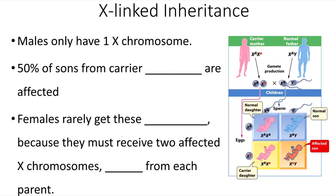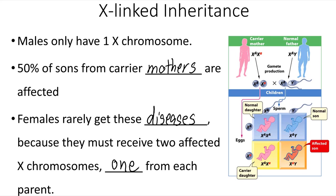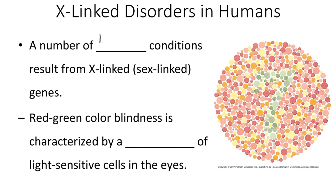Males have only one X chromosome, so if a mother is heterozygous for an X-linked gene, then 50% of sons from carrier mothers are expected to be affected. Females rarely get these diseases because they must receive two affected X chromosomes, one from each parent. This would also mean that the father would have to be affected by the disorder and the mother would have to at least be a carrier. There are a number of human conditions which result from X-linked, or sex-linked, genes.